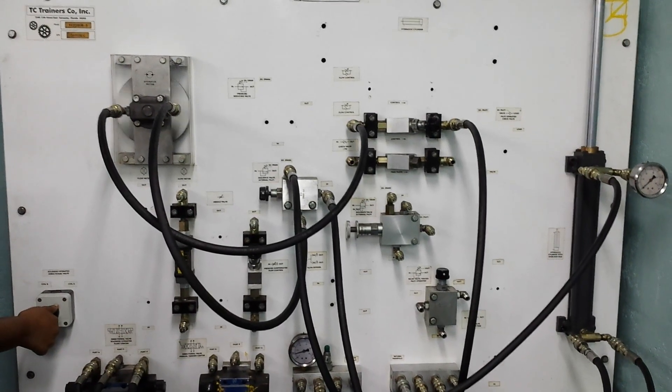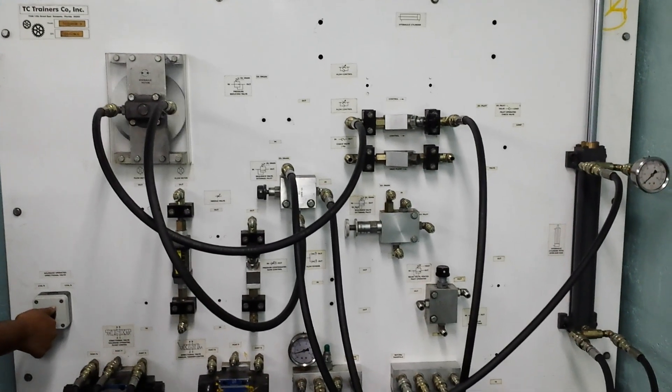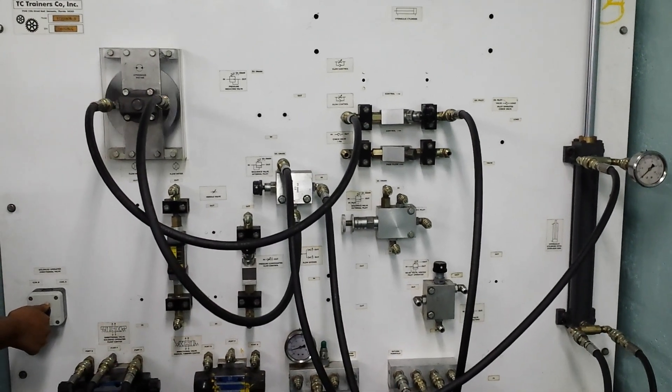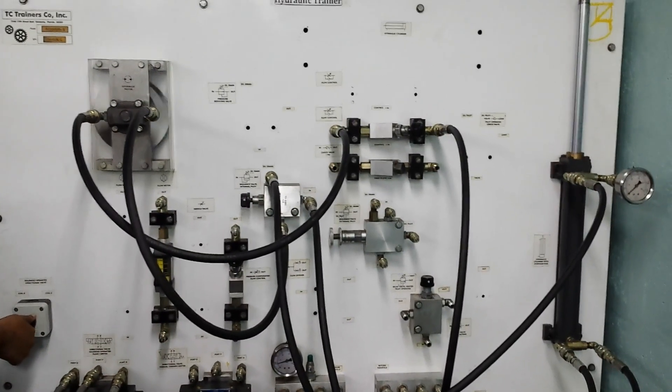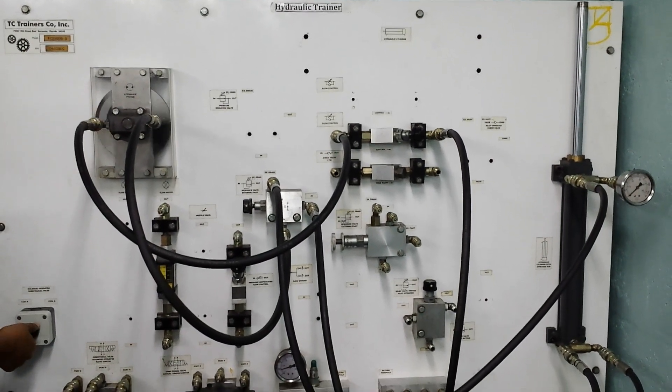When the rod fully extends, it sends a signal from the opposite rod end to the sequence valve. It sends fluid to the hydraulic motor, rotating as you can see.